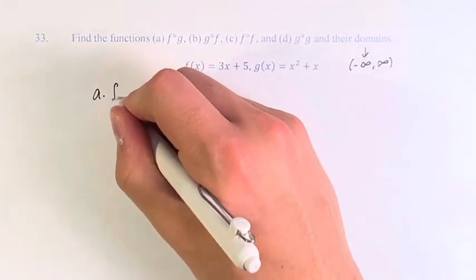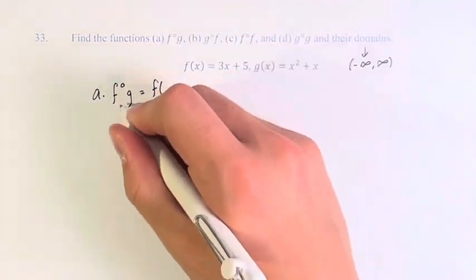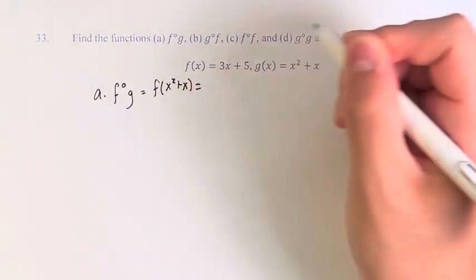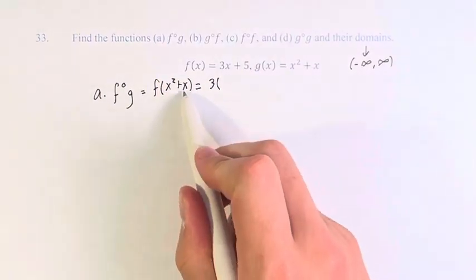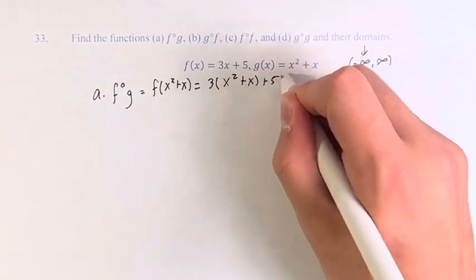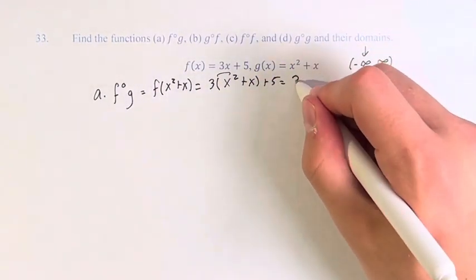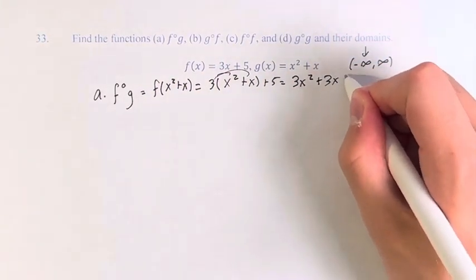First, we have f of g. So this means we're taking f of g of x, which is x squared plus x. That is three times our value, x squared plus x, plus five. Therefore, distributing here, we have three times x squared is three x squared, plus three times x is plus three x, plus five.